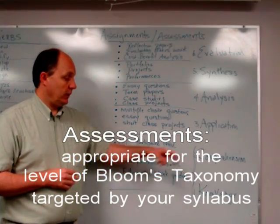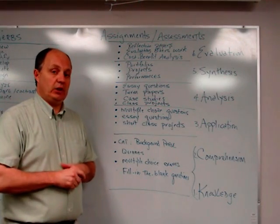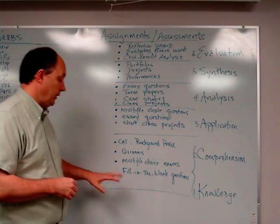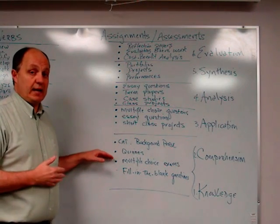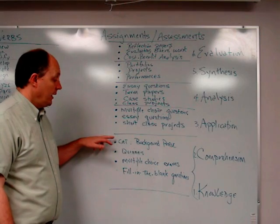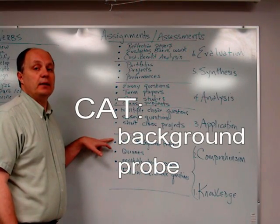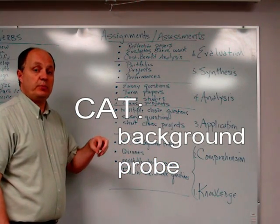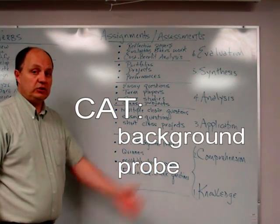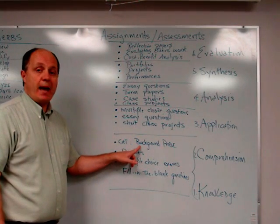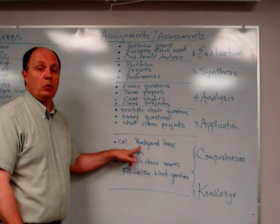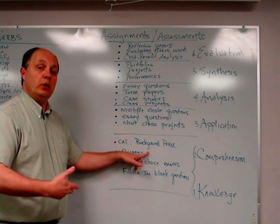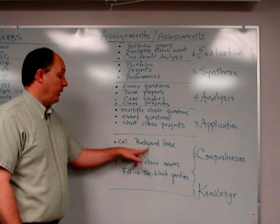Let me go back and talk about the first two levels — I'm going to combine them: knowledge and comprehension. Basically we're just trying to get students to show what they know and whether they can comprehend the material from the chapters. There's something in the classroom assessment techniques book by Angelo and Cross called background probes. A lot of knowledge and comprehension is material students have probably picked up previously in life or education. A background probe is a wonderful way to start the course — ask them a quiz or some questions about what they already might know.